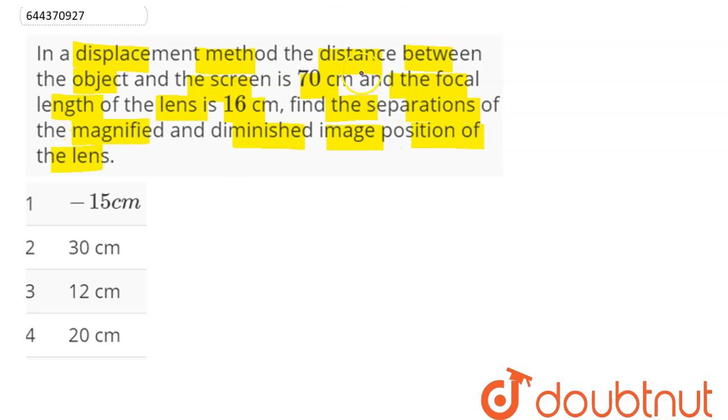Here, the distance between the object and screen is denoted by capital D, the distance between magnified and diminished image is denoted as small d, and the focal length is denoted as f.